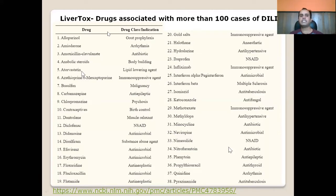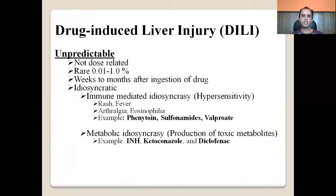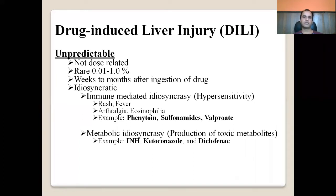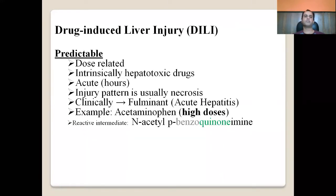You are not expected to remember every drug in the list, but try to remember at least 5 to 10. Drug-induced liver injuries are classified as predictable or unpredictable. Unpredictable hepatotoxicity is not dose-related, is very rare, occurs weeks to months after initiation of the drug, and results from idiosyncratic reactions — either immune-mediated hypersensitivity with rash, fever, arthralgia, and eosinophilia (e.g., phenytoin, sulfonamides, valproate), or metabolic idiosyncracy producing toxic metabolites (e.g., isoniazid, ketoconazole).